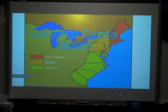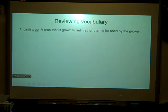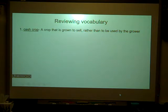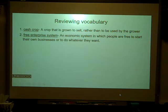Before we get started, there are some very important vocabulary terms that go with this part of the unit. A cash crop is a crop that is grown to sell rather than used by the grower. This is probably one of the biggest driving forces — the Europeans' interest in the colonies was those cash crops they were able to get. The free enterprise system allowed the colonies to pretty much trade with whoever they wanted, and that's just an economic system where people are free to start their own businesses.